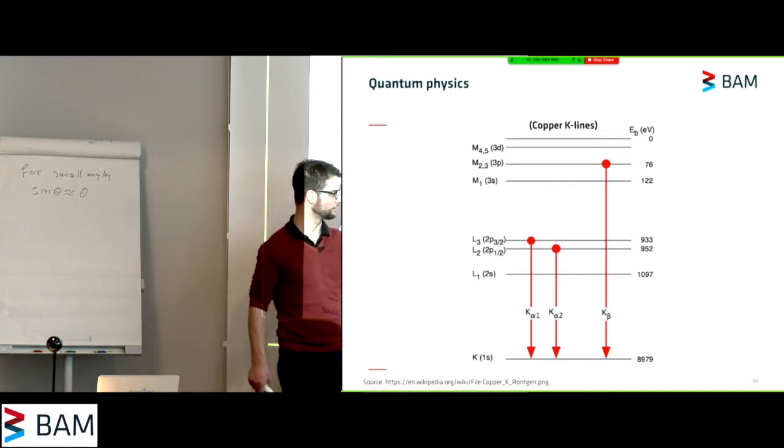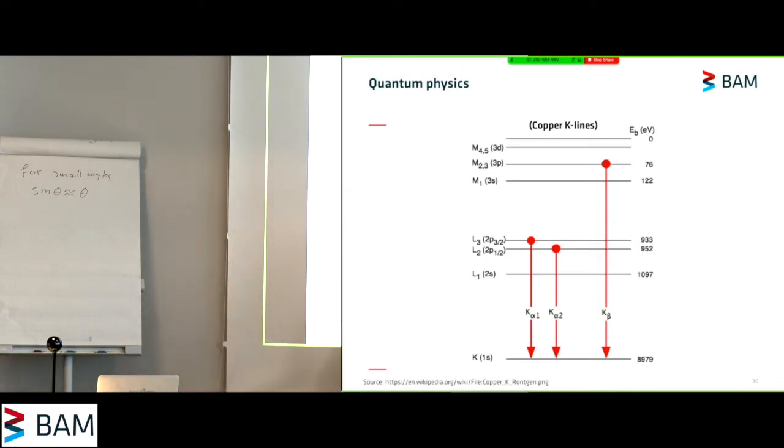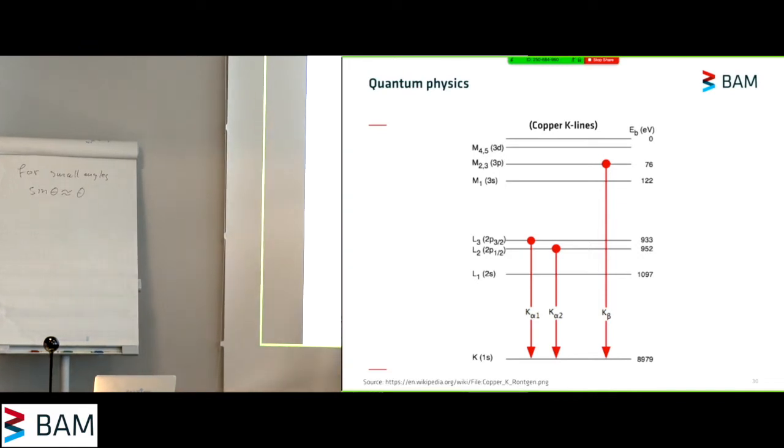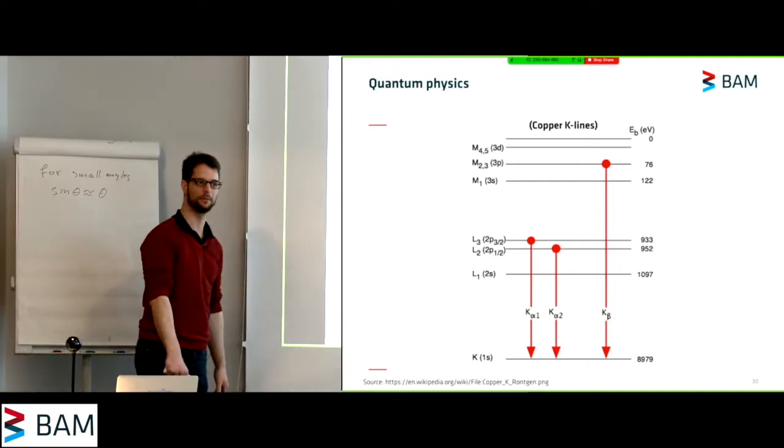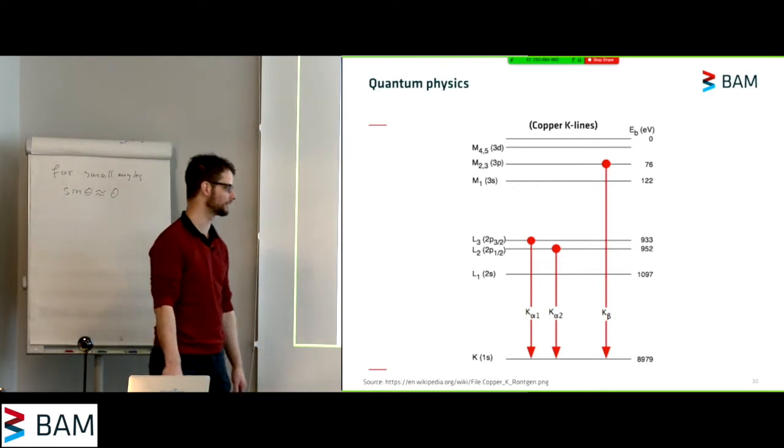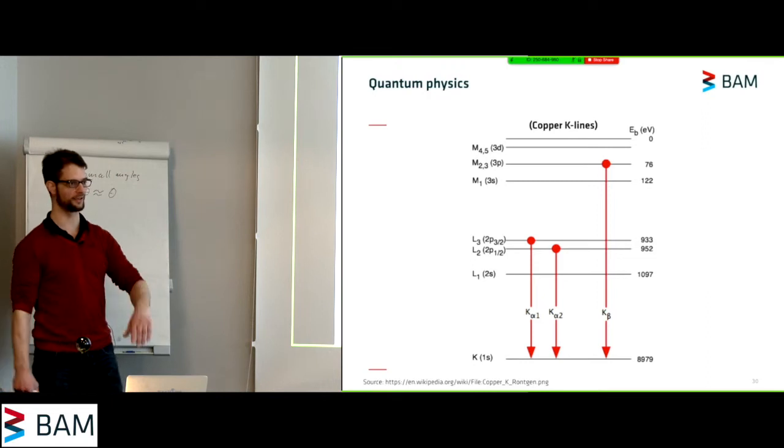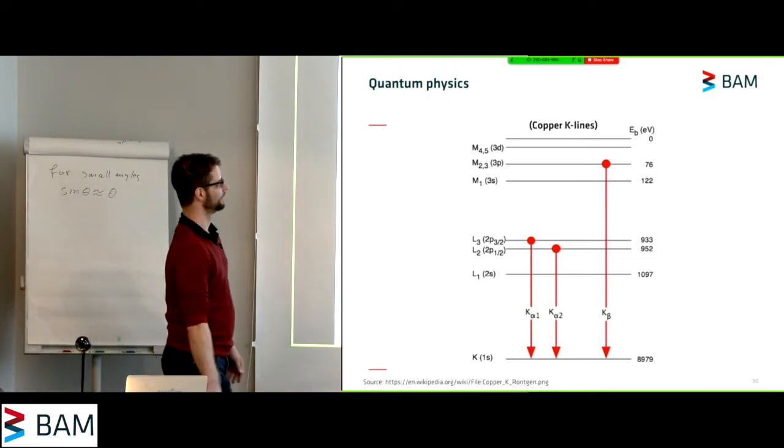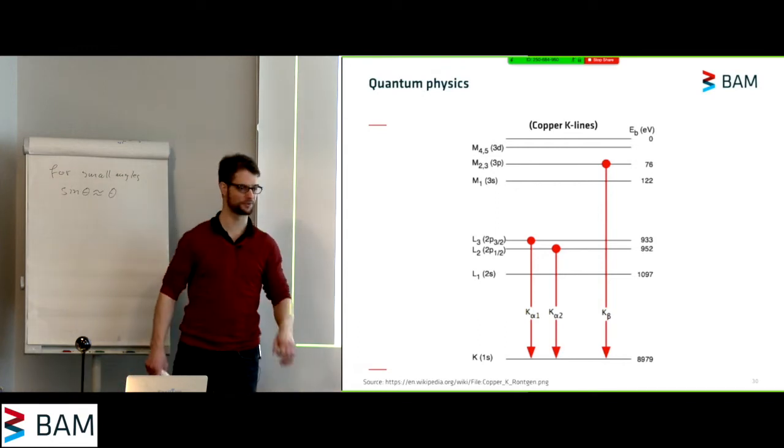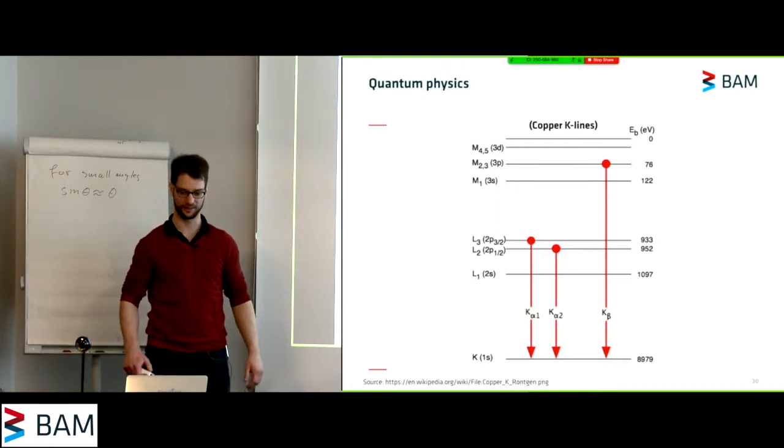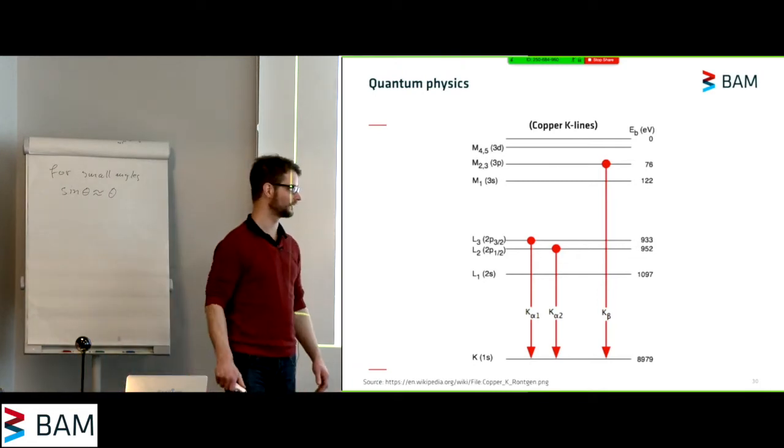The energy of the radiation that is emitted is exactly the difference in energy between the different energy levels. So for the k-alpha-1 radiation, that would be the difference between 8,900 electron volt and about 900 electron volt. So you create x-ray photons of about 8 kilo electron volt, which is exactly what we get. This is our 1.54 angstrom wavelength radiation that we all know from x-ray diffraction. That corresponds to 8 kilo electron volt energy transfers.